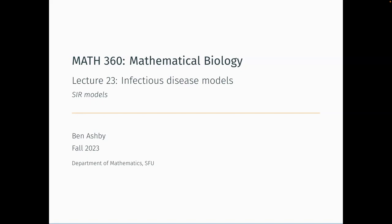Last time we started thinking about infectious disease models and met the SIR framework — susceptible, infected, recovered. Today we're diving into analyzing this model. We'll be thinking about questions like: when does an epidemic take off, what happens to that epidemic, and how many people get infected over the course of the epidemic. Wednesday's lecture will cover a variation on this model.